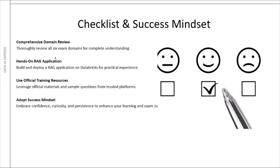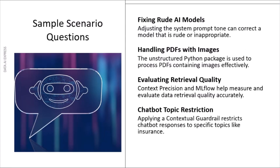My final advice: study all six domains, go in with complete preparation, and don't panic. Read the questions, read the answers, and you can often eliminate the wrong ones. I have prepared some sample question scenarios I could remember. You will see questions on rude AI behavior — how to fix inappropriate AI responses. You will be asked how to process PDFs with images and what model to choose. You will see questions on RAG evaluation and metrics, and scenarios on how to restrict chatbot behavior to certain topics. In the upcoming section, I'll share 10 sample questions with my answers to give you a real feel for the exam. If you want more videos like that, let me know in the comments — I'm happy to make a deeper dive on practice questions and answers.